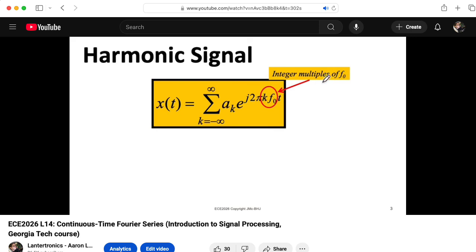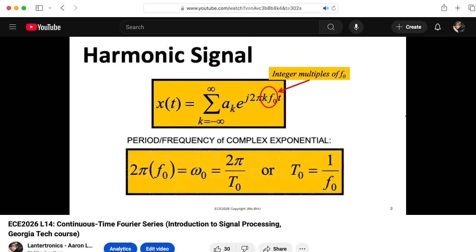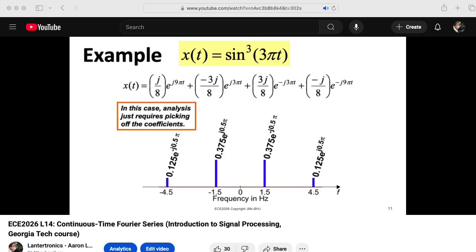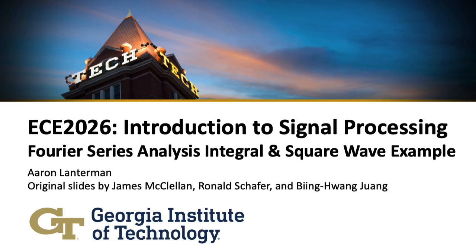In the last lecture of EC2026, Introduction to Signal Processing, we looked at continuous time Fourier series and saw that we could represent a periodic signal as a possibly infinite sum of sinusoids whose frequencies are all integer multiples of some fundamental frequency. We saw that if you're lucky, you could use inverse Euler's formula and other tricks to rewrite your expression as a Fourier series directly. But sometimes, such as in the case of trying to analyze a square wave, you can't do that. So you have to resort to using the Fourier series analysis integral.